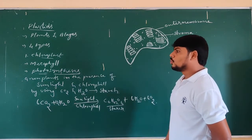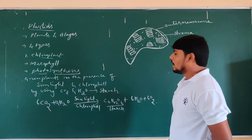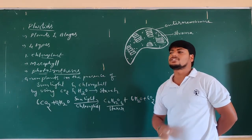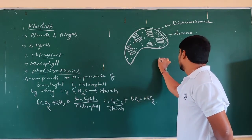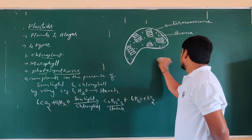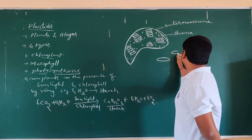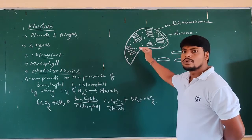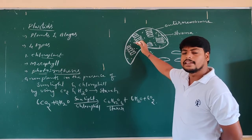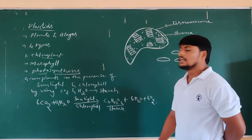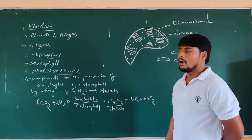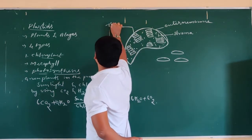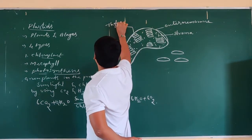In the stroma, there are flattened sac-like structures. These flattened sac-like structures found in the stroma are called thylakoids.